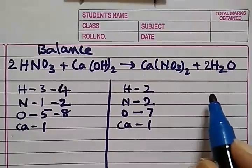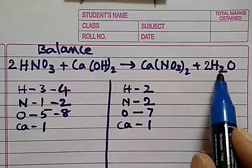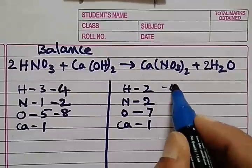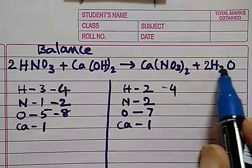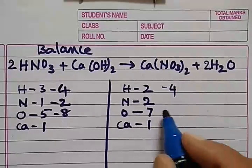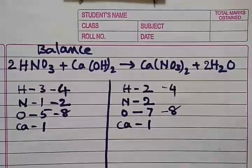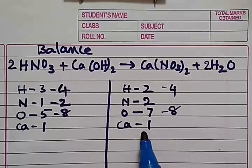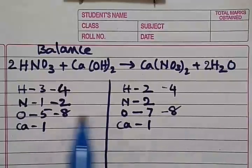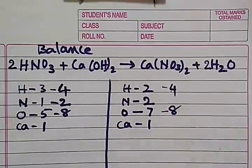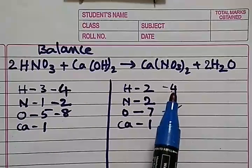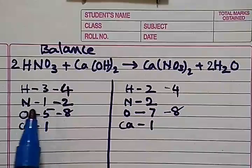You're not disturbed nitrogen and calcium. Now nitrogen is also same, hydrogen same, nitrogen also same, oxygen is also same, calcium is also same on both the sides. So this way we can balance the chemical equation.